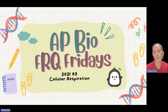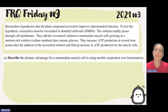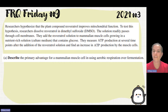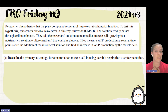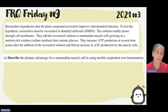Today we're going to do question number three from the 2021 exam, and it's on cellular respiration. Researchers hypothesize that a plant compound improves mitochondrial function. To test this, the researchers dissolve that compound into DMSO. The solution readily passes through cell membranes. They add that solution to mammalian cells growing in a nutrient-rich solution that contains glucose, then measure the ATP production at several points and discover an increase in ATP production by muscle cells.